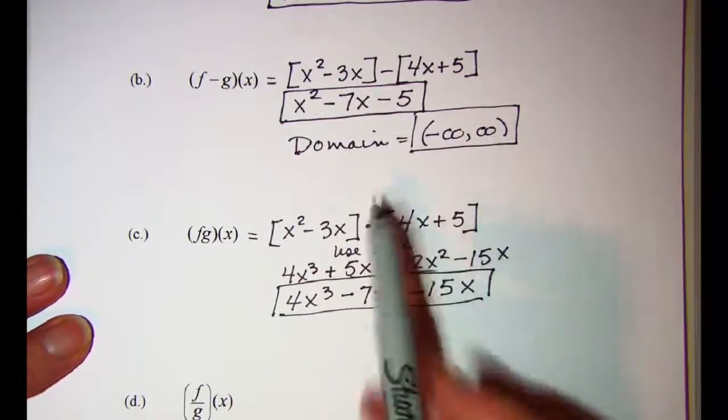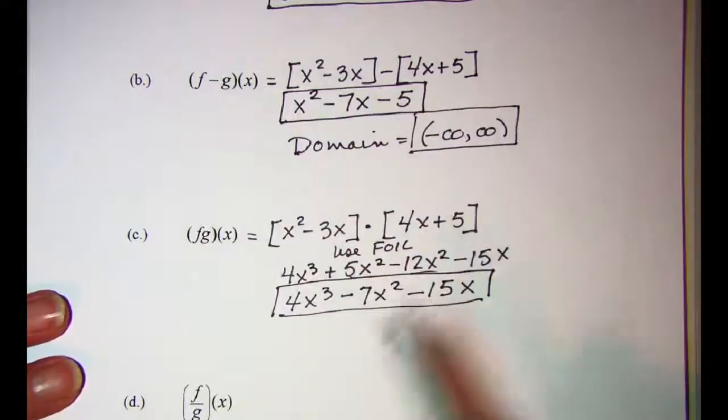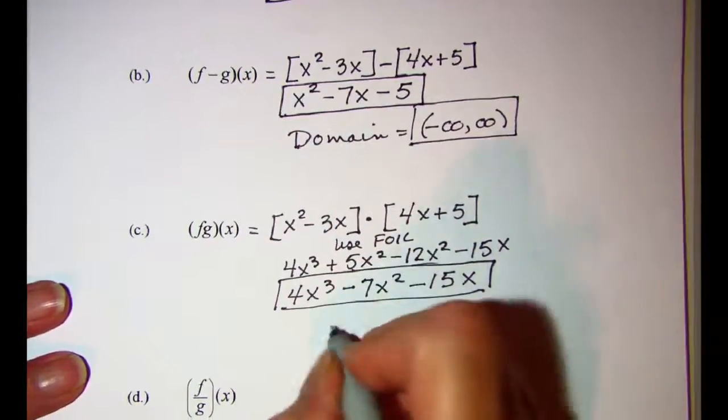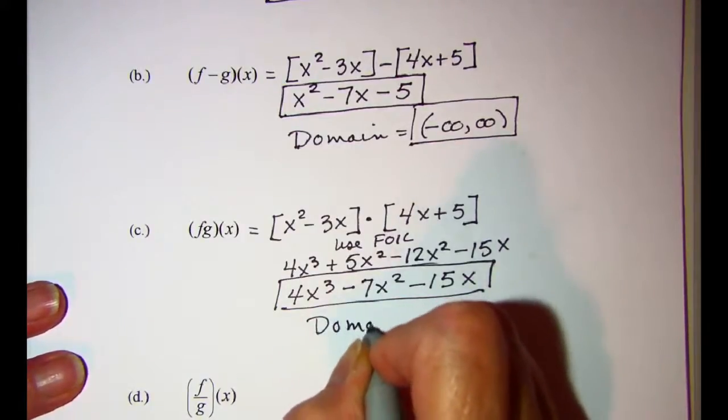Our domain—again we're wanting to find what the two have in common. The domain of each of these functions is all real numbers, so our domain for the product of the two is all real numbers.